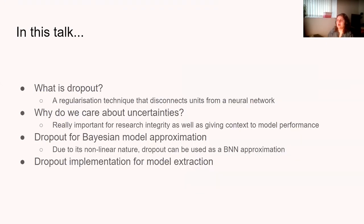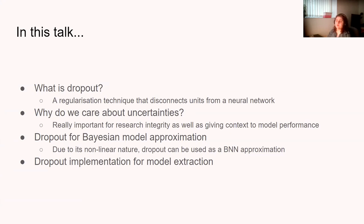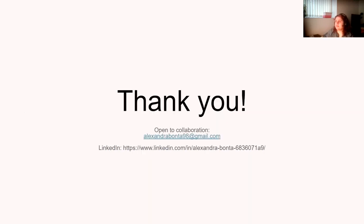So in this talk, we talked about what dropout is — a regularization technique that disconnects units from a neural network, which also ended up being very good at uncertainty extraction. We covered why we care about uncertainties — they give research integrity and context to model performance. We also found out how dropout can be used for Bayesian model approximation and how to implement it for uncertainty extraction. Thank you for listening — I'm open for collaboration via my email and LinkedIn.